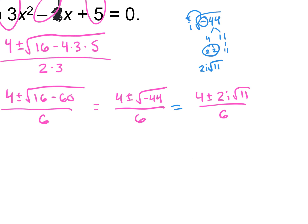Now simplify: all three numbers — 4, 2, and 6 — are divisible by 2. Dividing each by 2 gives 2 plus or minus i square root 11 over 3. That's the final answer.